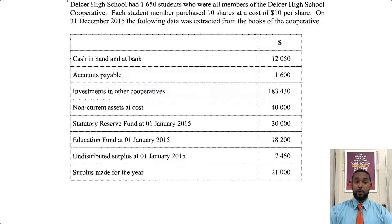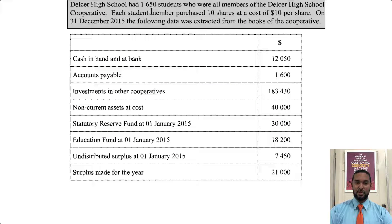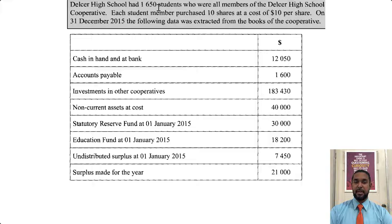Let's take a look at the next part of the question. So it reads that Delca High School had 1,650 students who were all members of the Delca High School cooperative. Each student member purchased 10 shares at a cost of $10 per share. So if you're buying 10 shares at $10 each, you're spending $100. And if you multiply $100 by 1,650, you're going to end up with $165,000. So that's the opening capital. On 31st December 2015, the following data was extracted from the books of the cooperative.